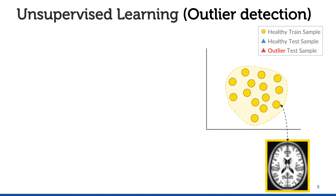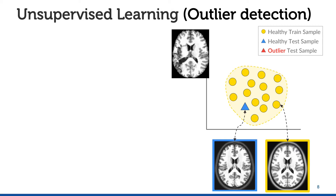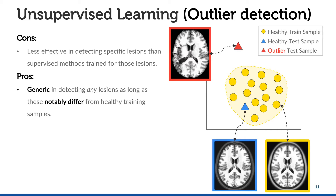A possible approach for that is to use unsupervised learning, more specifically outlier detection methods. These methods aim to learn a healthy distribution from a training image set with only healthy subjects. If an unseen test image belongs to this healthy distribution, it is considered normal and healthy. If the image is an outlier, it will be considered an anomaly. One con of this approach is that it's less effective in detecting specific lesions than supervised methods trained for those lesions. But a pro is that it's generic in detecting any lesions, as long as these are notably different from healthy training samples.